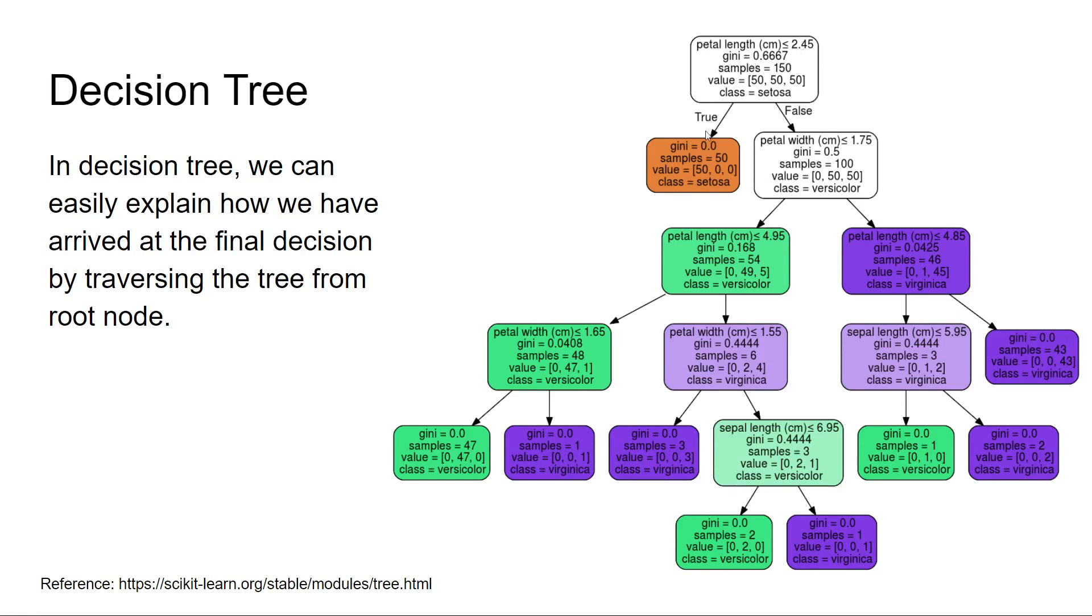Or else, go to the right side of the tree, and so on. Using these rules, you can easily explain why this belongs to Virginica, Setosa, or Versicolor. If we use decision trees, we can easily explain how we have arrived at the final decision by just traversing through the tree from the root node.